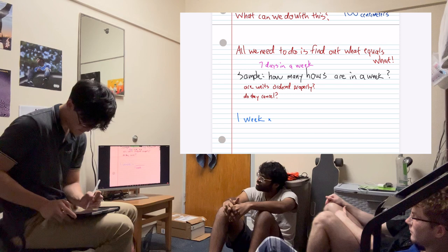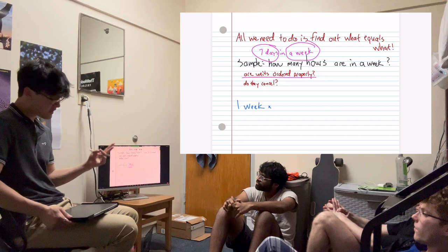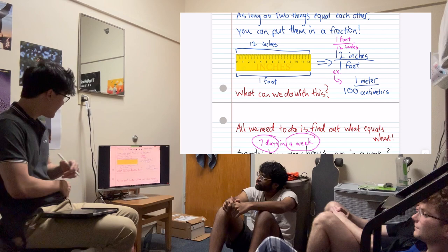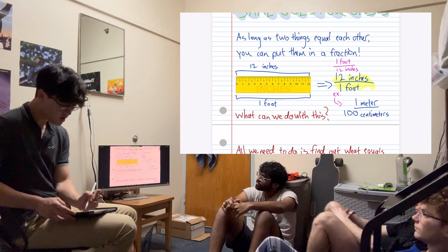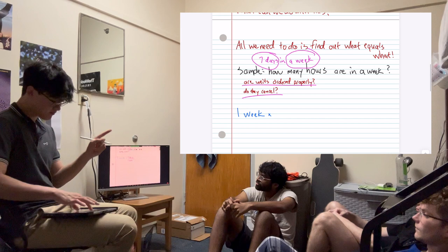And while we go through this, we have to remember two things. Are the units ordered properly, and do they cancel? So units order properly. Remember how I said up here before that you can write 12 inches in one foot with the 12 inches on top or the one foot on top, right? So you've got to remember which one do we want to put.